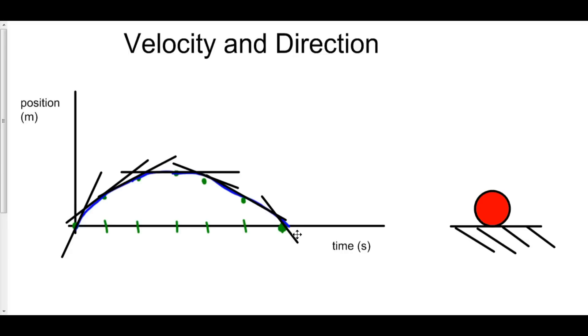We'll talk more about that later when we talk about maxes and mins of functions. But you'll notice here that the velocity, positive to negative, means that you have a max.